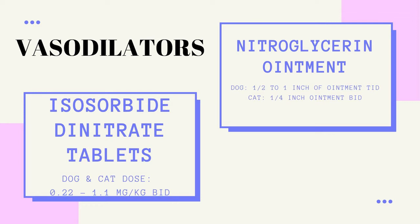Nitroglycerin ointment relaxes vascular smooth muscle via the generation of nitric oxide. It is used primarily in heart failure or pulmonary edema to reduce preload or decrease pulmonary hypertension. Nitroglycerin ointment is applied to the pet's skin, often in the groin or axillary area or inside the ear flap. The use of gloves is recommended while applying this medication to the patient's skin.